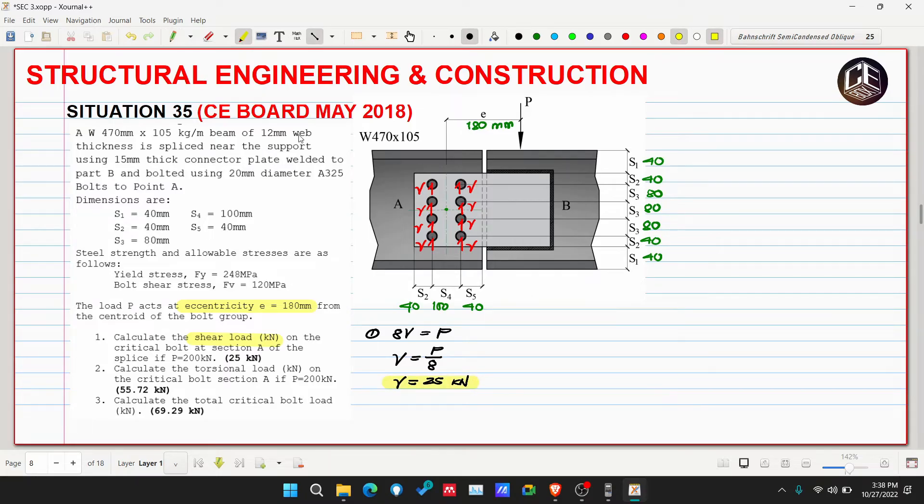Number 2: Calculate the torsional load in kilonewtons on the critical bolt at section A if P is equivalent to 200 kilonewtons. Actually, this force could also be inclined. If the force is inclined, it means it has vertical and horizontal effects, so the shear forces received by our connection would be two types - horizontal shear force and vertical shear force. It just happens here that they're all vertical because our P is vertical. Since we have eccentricity, there will be a moment effect or torsional effect on the connection.